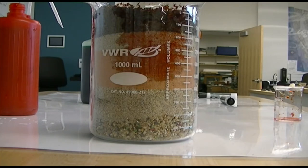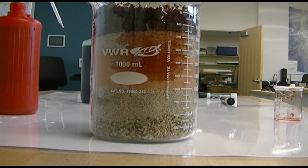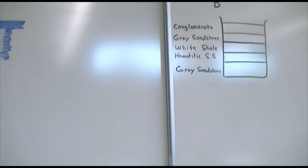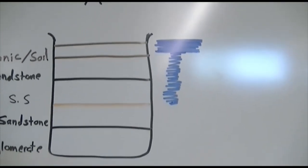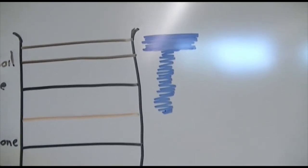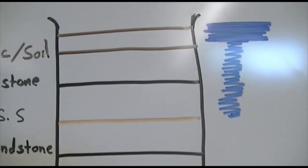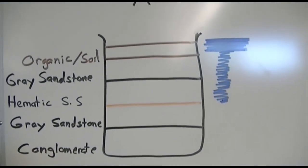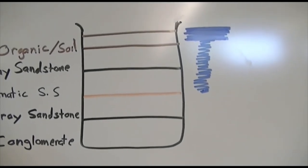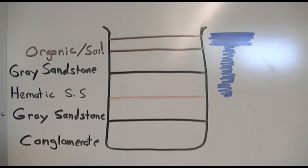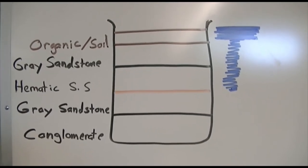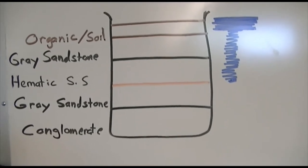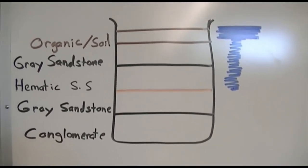Even through the hematitic sandstone the water moved fairly quickly. The wider line on the diagram indicates water moved slowly through the organic material — it has a high rate of porosity but lower permeability. The gray sandstone and hematitic sandstone, both being sandstones, have a higher rate of permeability, meaning they allow water to move through quicker.